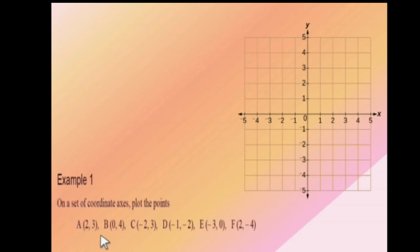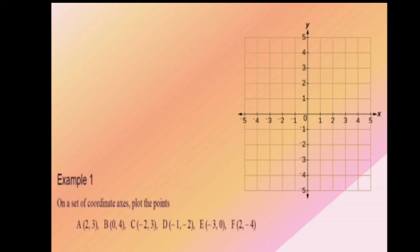Point B is (0, 4). So X is 0, which is at the origin horizontally, and Y is 4 — 1, 2, 3, 4. So this is point B. Take a screenshot and try to locate where the remaining points are: A, B, C, D, E, and F.